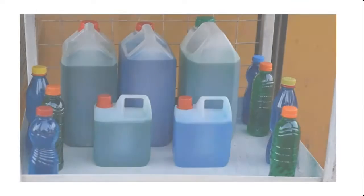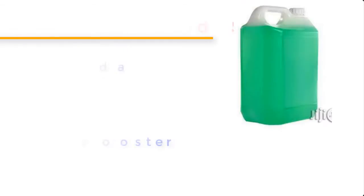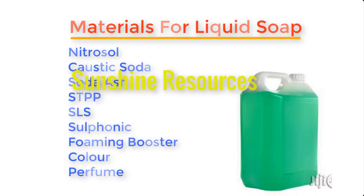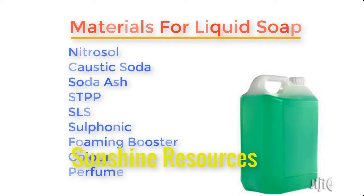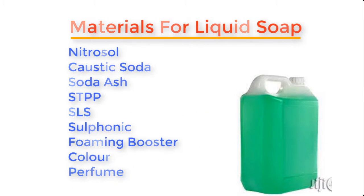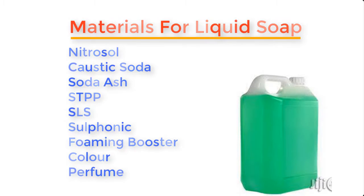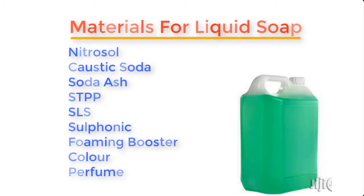In our previous videos we have produced liquid soap using about eight or nine items, such as nitrosol, caustic soda, soda ash, SDPP, SLS, sulfonic acid, foaming booster, color, and perfume. To watch a video on how to make liquid soap using those items, I've dropped the link in the description box below — go to that link and click on it to watch the video.